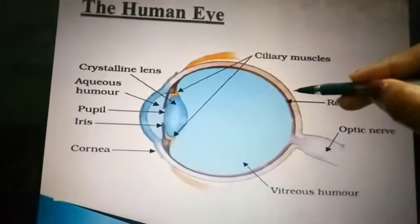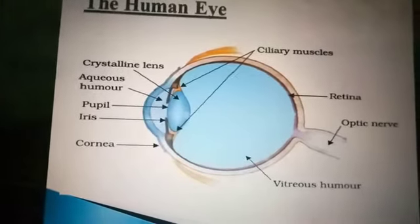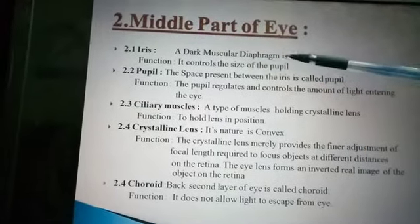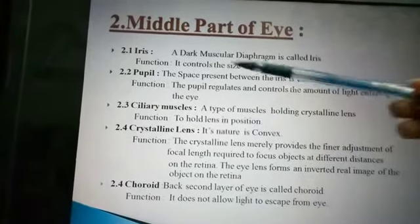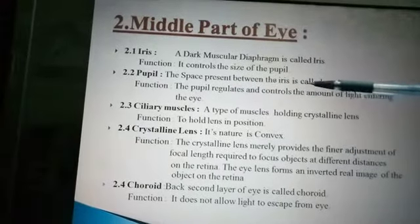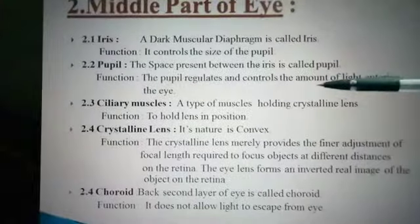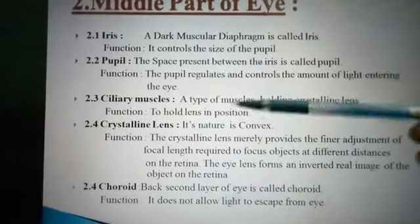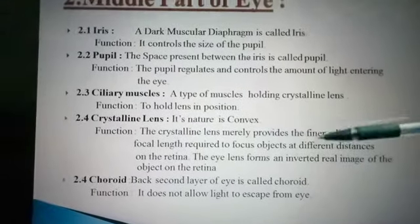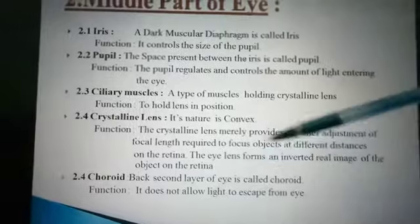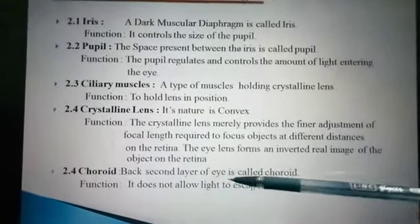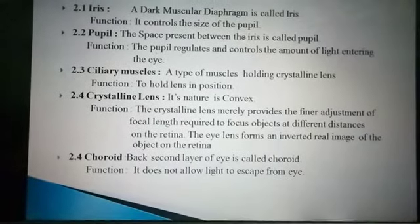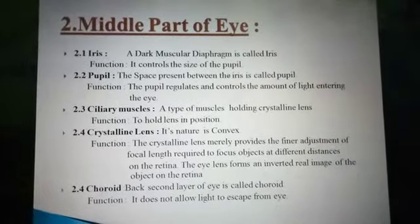About iris: iris is a dark muscular diaphragm that controls the size of the pupil. Pupil is the space within the iris — it regulates and controls the amount of light entering the eye. Ciliary muscles hold the lens in position. The crystalline lens has a convex, converging function. Choroid is the back second layer of the eye, and it does not allow light to escape from the eye. This is all about the middle part of the eye.